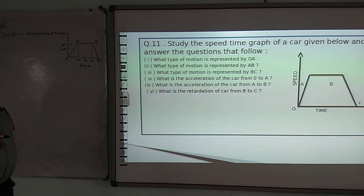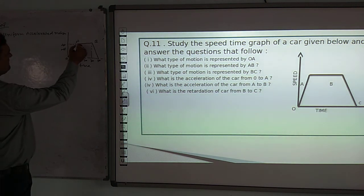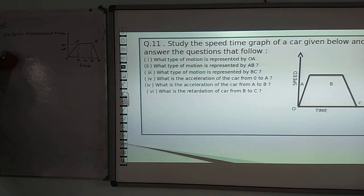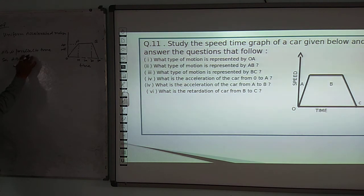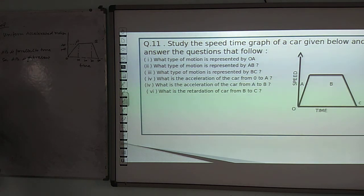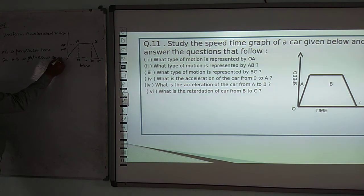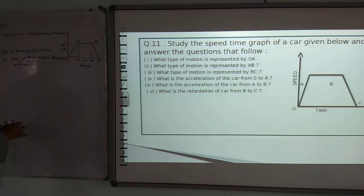The second part asks what type of motion is represented by AB. AB is parallel to the time axis, meaning there is no change in the car's speed between A and B. So AB represents constant motion — the speed remains steady.